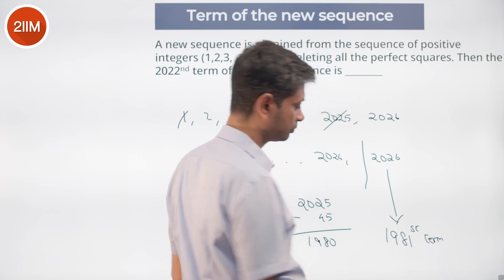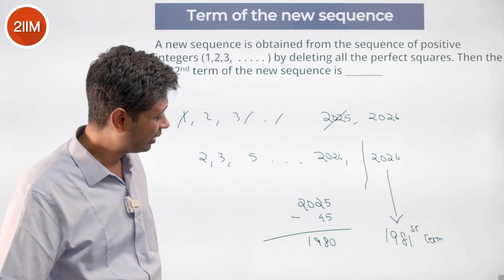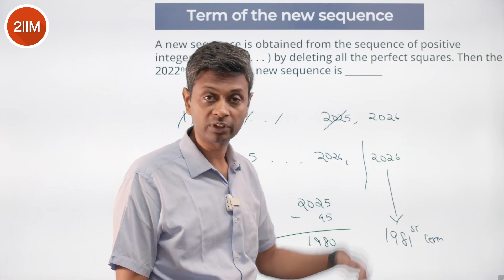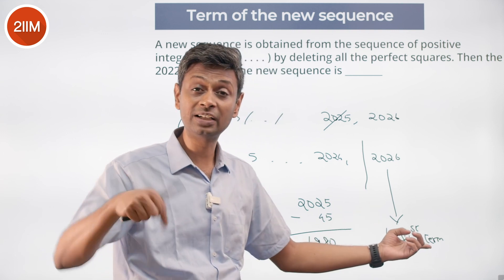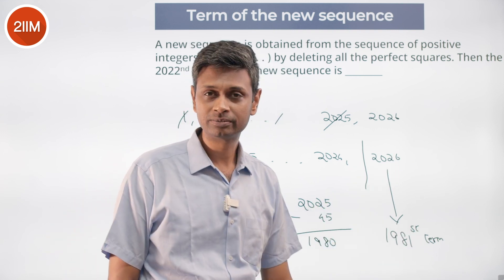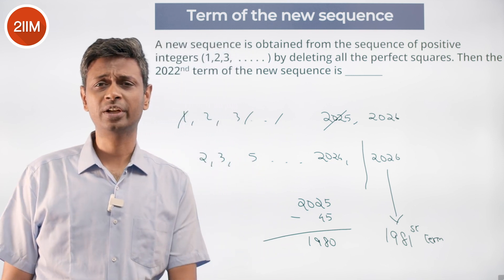The 1982nd term is 2027, the 1983rd term is 2028, the 1984th term is 2029, and so on.